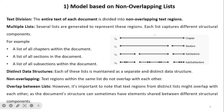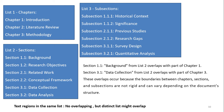As the document structure can sometimes have elements shared between different structural components, distinct lists may overlap. Consider a document with three chapters: Chapter 1 is Introduction, Chapter 2 is Literature Review, and Chapter 3 is Methodology. List 1 is for chapters. A second list is maintained for sections: sections 1.1 and 1.2 for Chapter 1, sections 2.1 and 2.2 for Chapter 2, and sections 3.1 and 3.2 for Chapter 3.